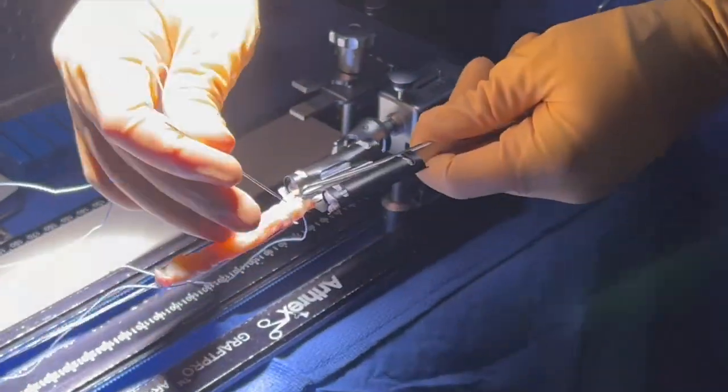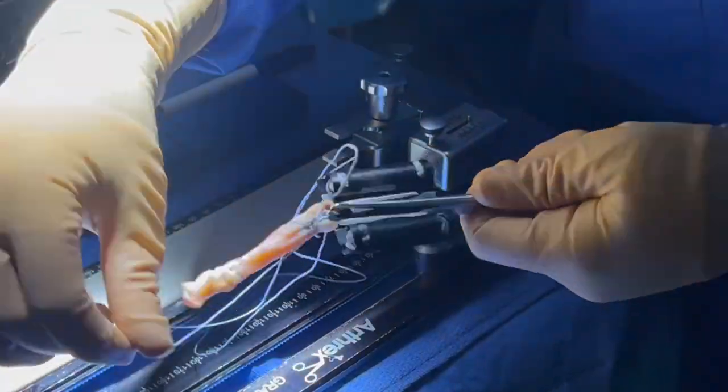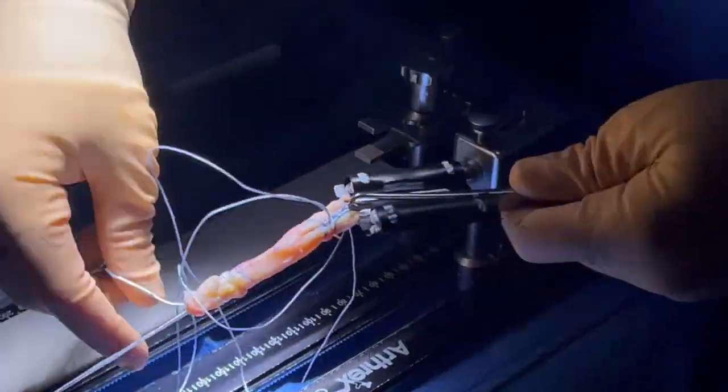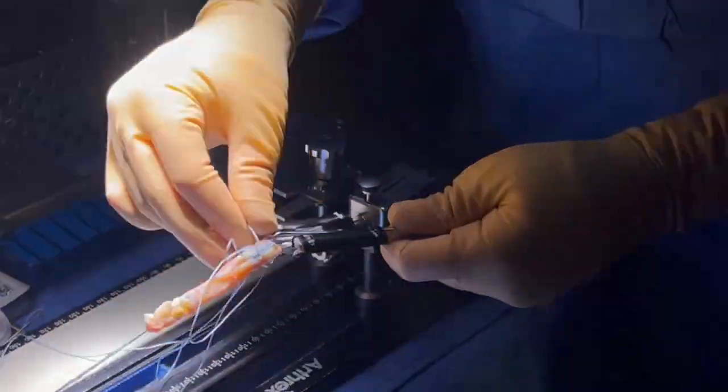And then we place a few more passes looping the suture around. This integrates the tape well into the quad tendon and allows for robust fixation.